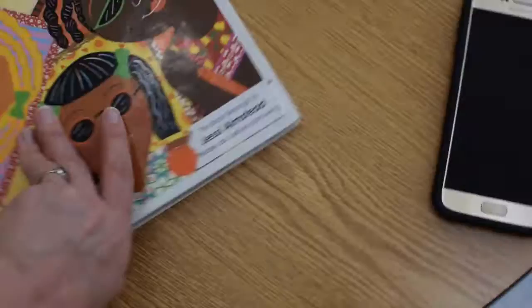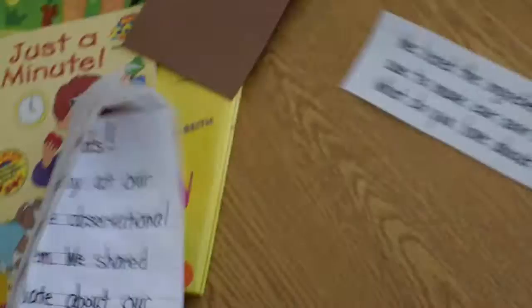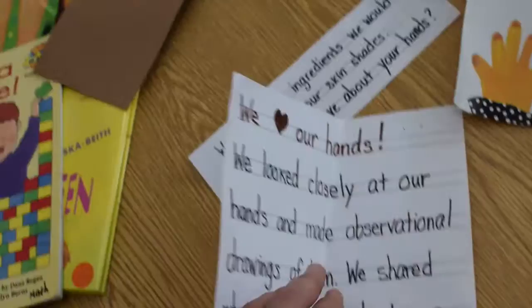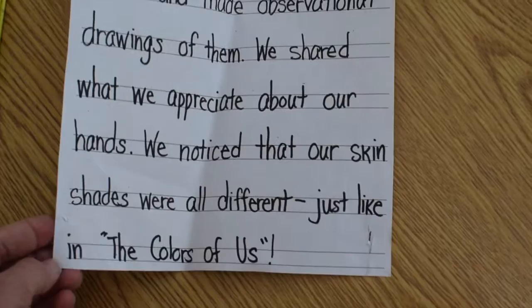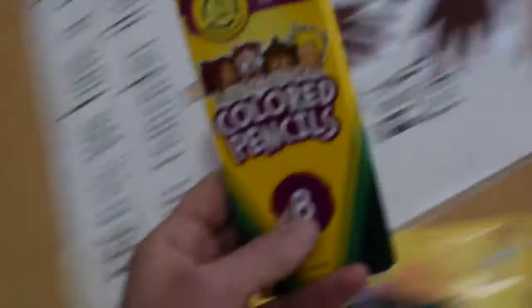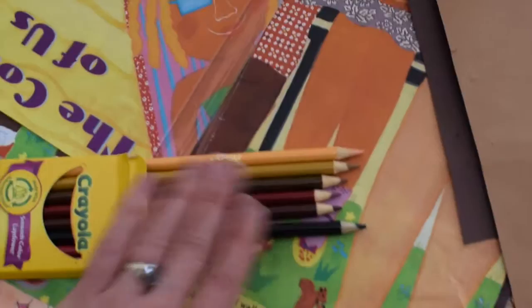Last year, after we read this book, my class was inspired to look at their hands. They started putting their hands together like you see in the beginning. That inspired the children sketching their hands. And we talked about what we appreciate about our hands, what our hands can do. And it inspired a little art project where students trace their hand. Well, let me read you what was on our bulletin board. We love our hands. We looked closely at our hands and made observational drawings of them. We shared what we appreciate about our hands. We noticed that our skin shades are all different, just like in The Colors of Us.